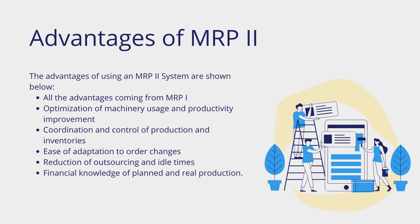The advantages of using an MRP-2 system include all the advantages coming from MRP-1, plus: optimization of machinery usage and productivity improvement, coordination and control of production and inventories, ease of adaptation to order changes, reduction of outsourcing and idle times, and financial knowledge of planned and real production.